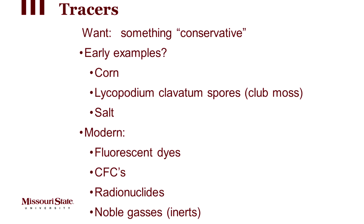In modern times, we use things like radionuclides from the atmosphere. Above-ground nuclear bomb testing in the 1940s, 50s, and 60s left a peak of radioactive elements. Using a midpoint around 1962 or 1963, we can estimate that water containing a certain amount of those radioactive nuclides entered the ground around that time. We can also intentionally add radionuclides that aren't naturally occurring in the water and trace those elements.